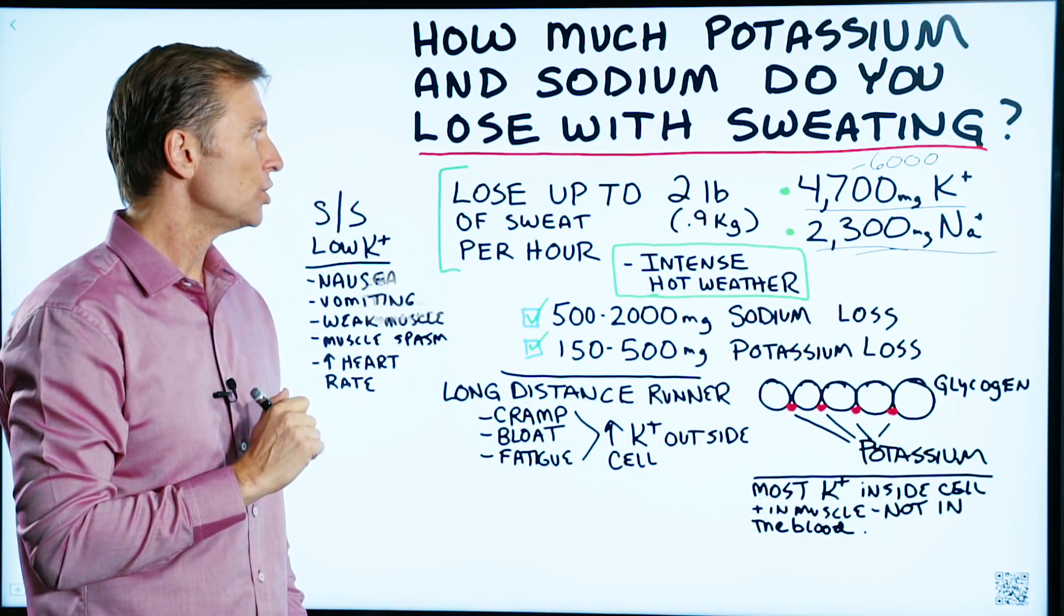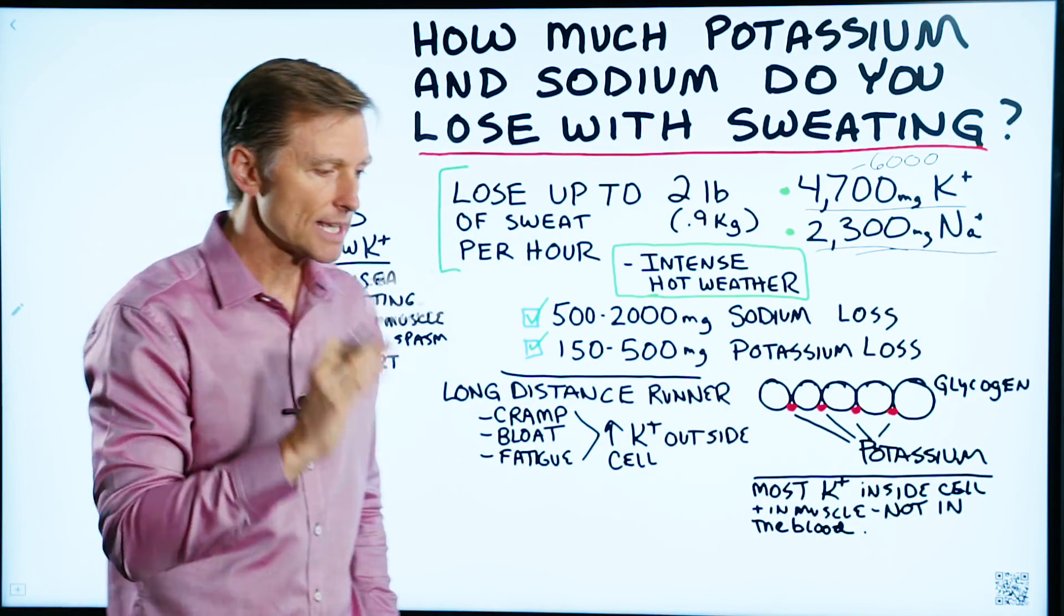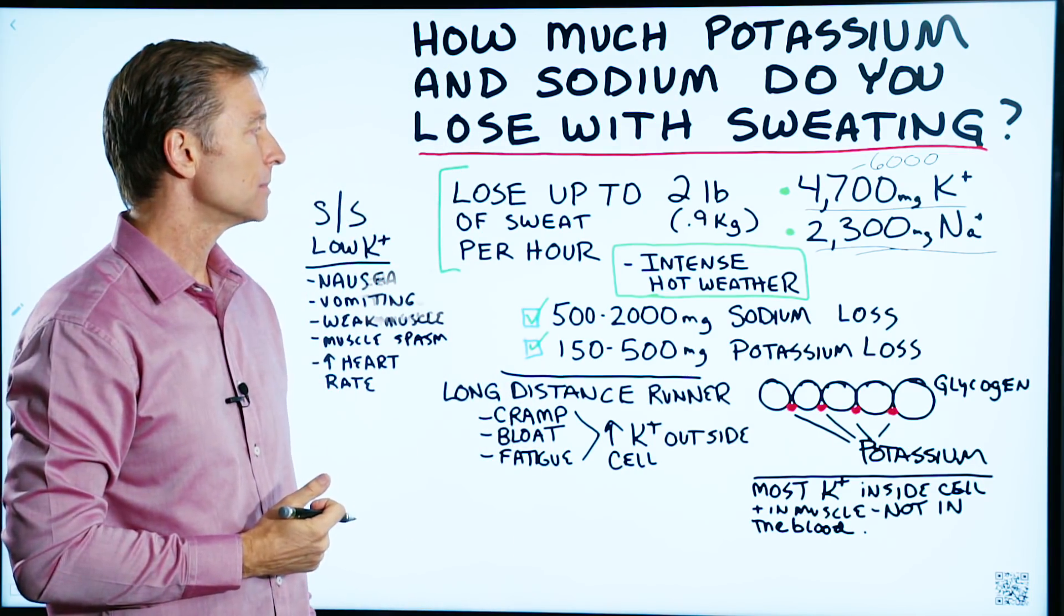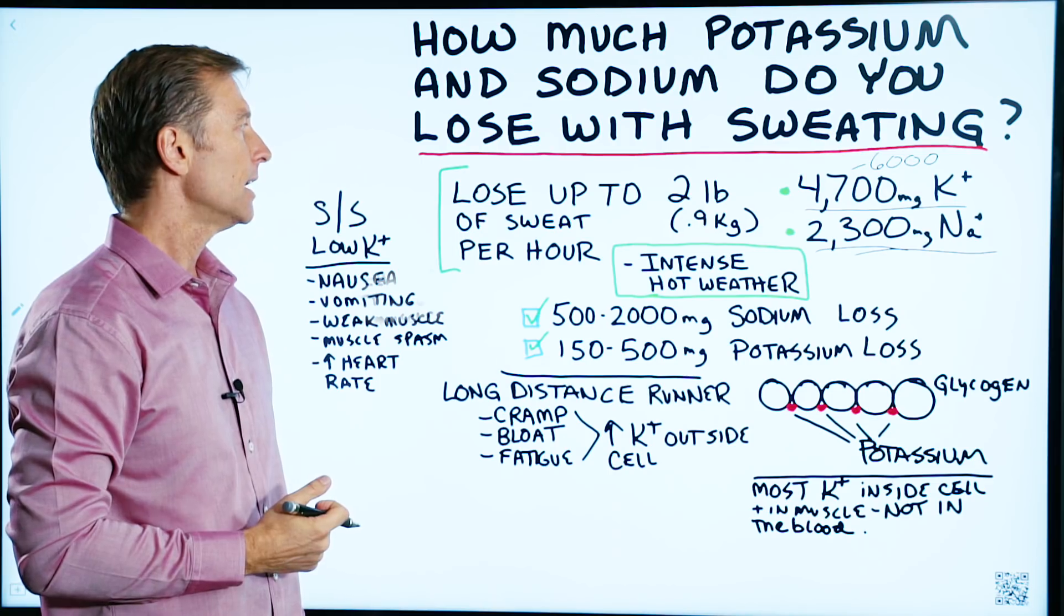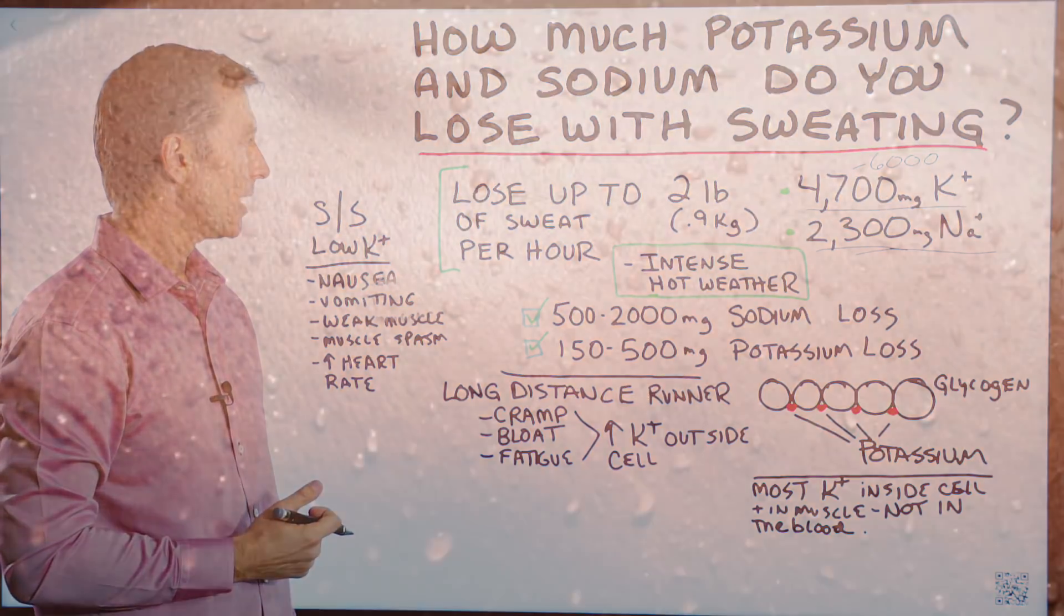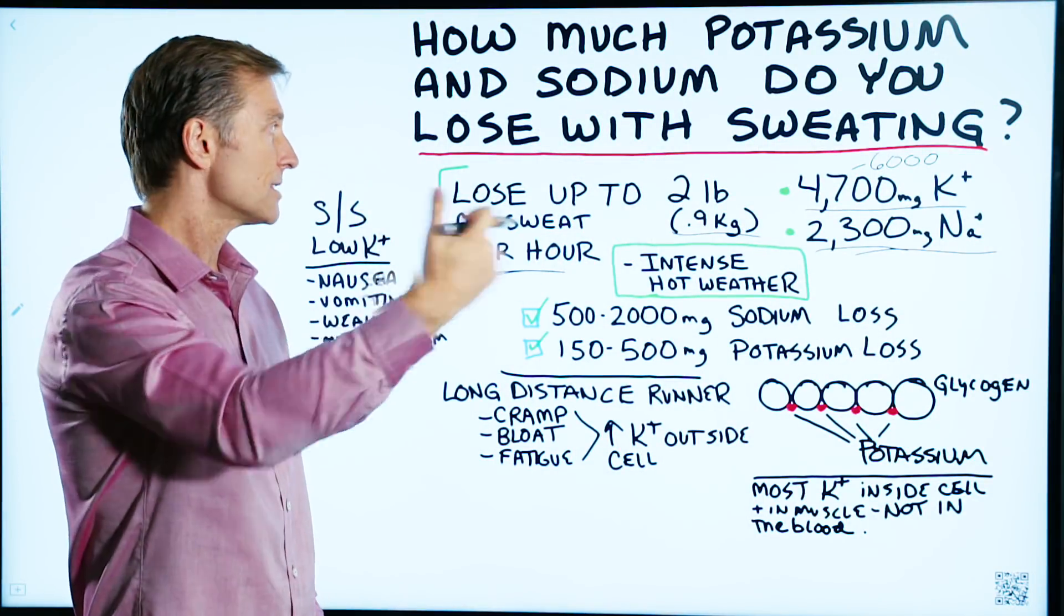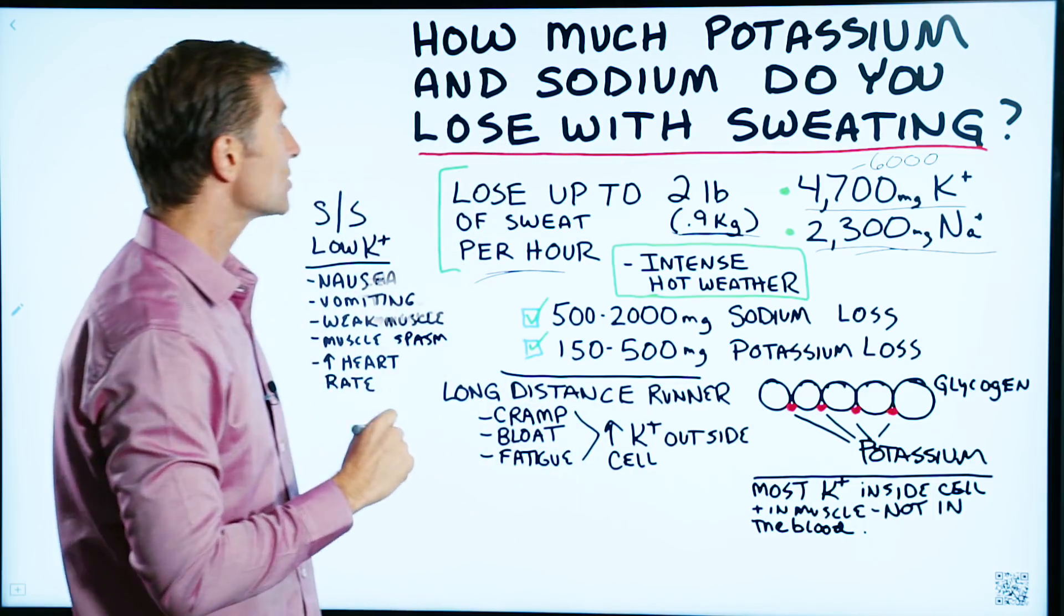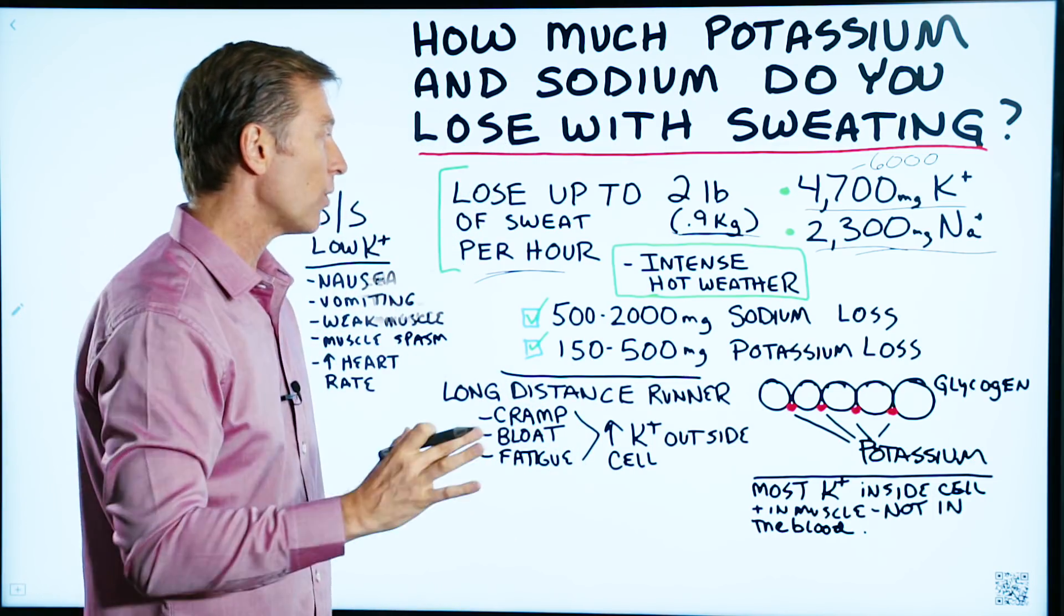Let's say, for example, you are working out really intensely outside where it's hot in the summer and you're playing tennis. You could lose up to two pounds of sweat. For those people that are on the metric system, a little more advanced than us Americans, that's 0.9 kilograms, almost one kilogram of sweat every single hour.